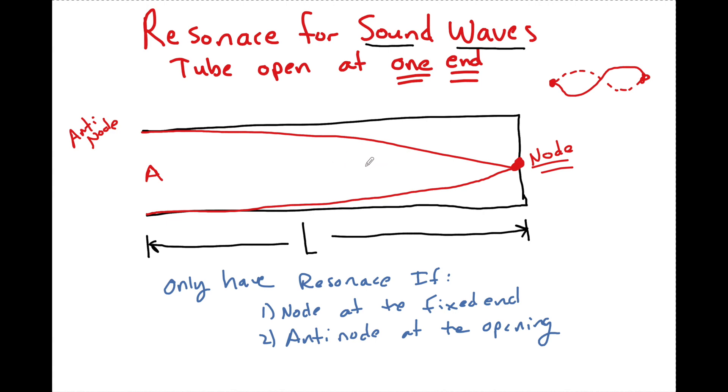We have to be able to identify how long in terms of wavelength is this wave. From here to here, this is one quarter of a wavelength. We have L now equal to one quarter of a wavelength. So the wavelength of the first resonant frequency is equal to 4L.